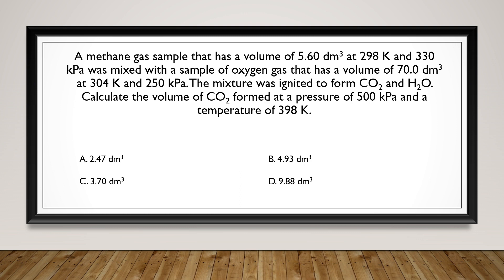A methane gas sample that has a volume of 5.60 decimeter cubed at 298 kelvin and 330 kilopascals was mixed with a sample of oxygen gas that has a volume of 70.0 decimeter cubed at 304 kelvin and 250 kilopascals. The mixture was ignited to form CO2 and H2O. Calculate the volume of CO2 formed at a pressure of 500 kilopascals and a temperature of 398 kelvin.